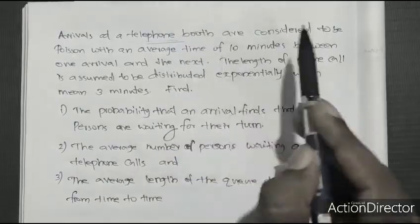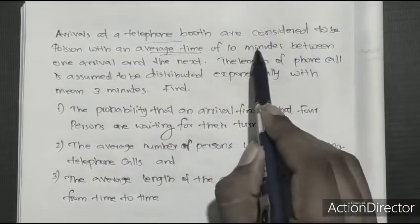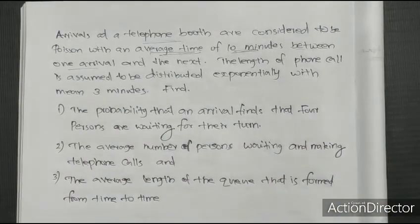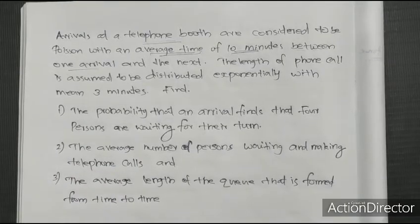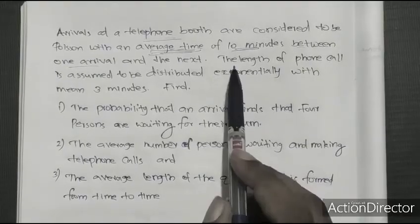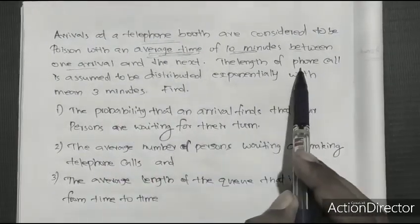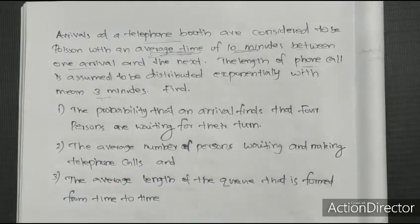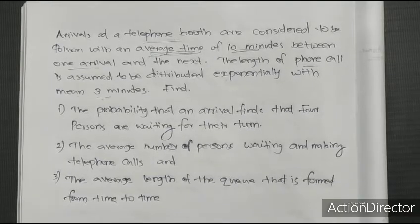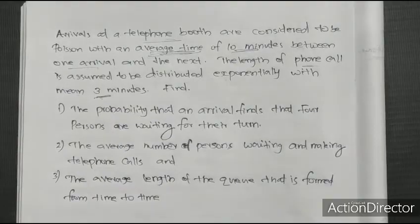In a telephone booth, arrivals follow a Poisson distribution. The average arrival time is 10 minutes between arrivals. The length of phone call is assumed to be exponentially distributed — that is, the phone call service follows an exponential distribution with mean 3 minutes. So the average time between arrivals is 10 minutes and service time is 3 minutes.